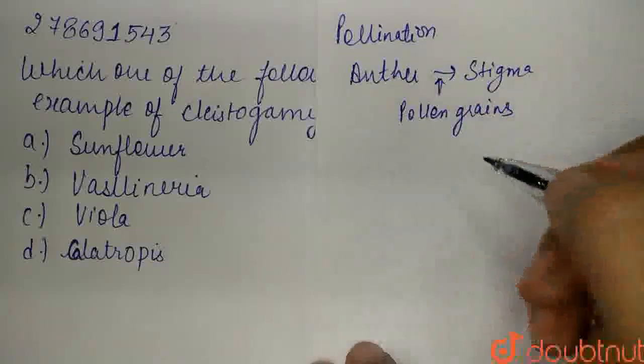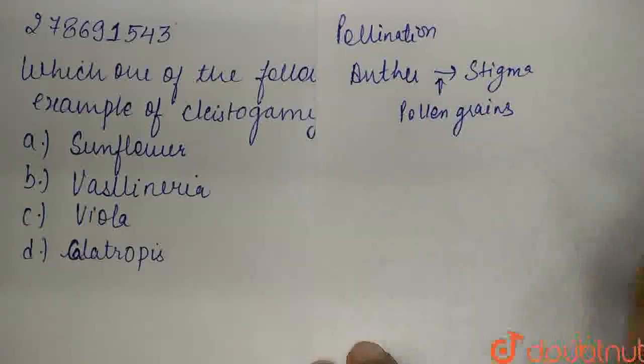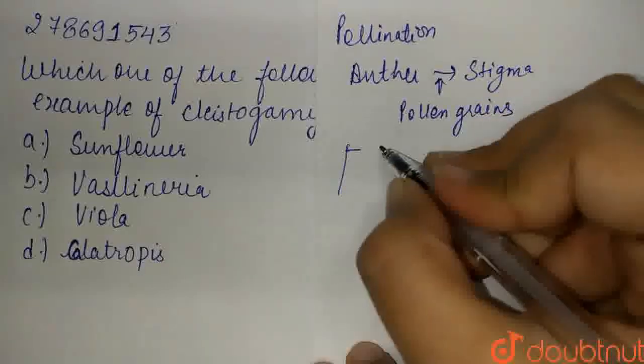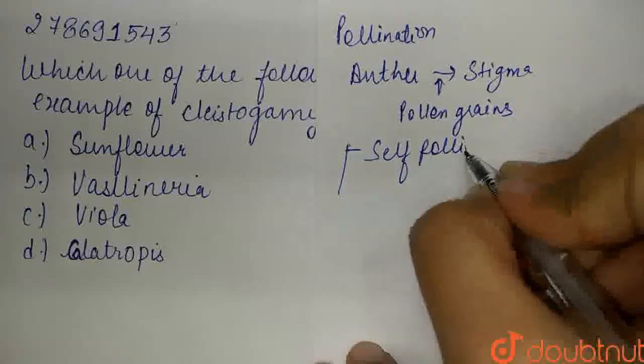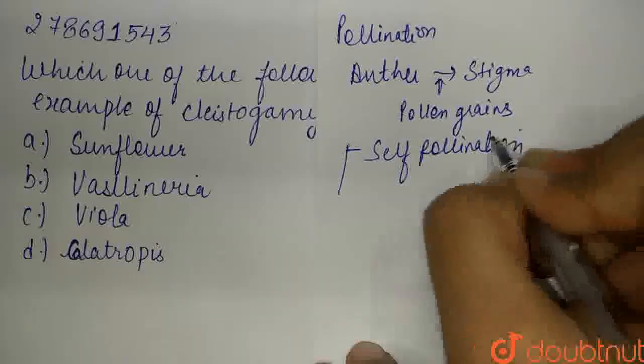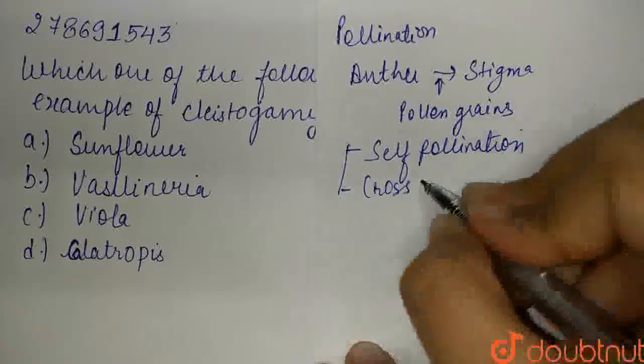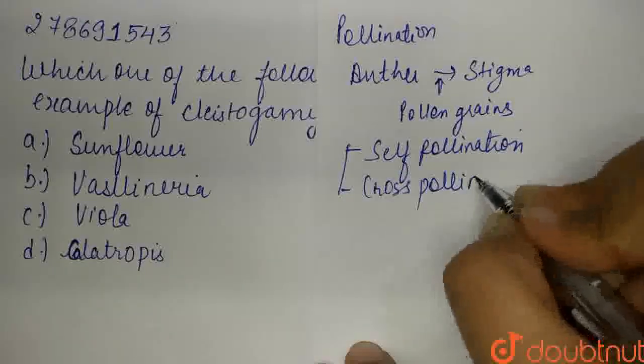So guys, pollination can happen within the same flower, or it can happen between different flowers. When pollination happens within the same flower, it's called self-pollination. And when it happens between different flowers, it's called cross-pollination.